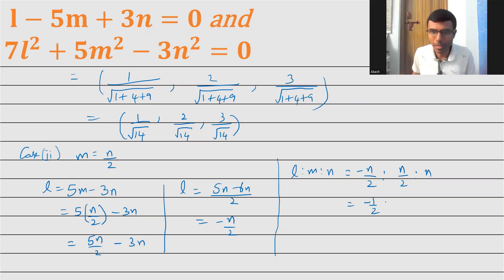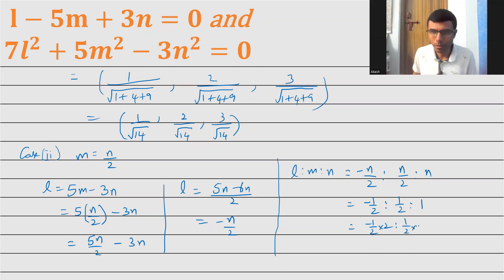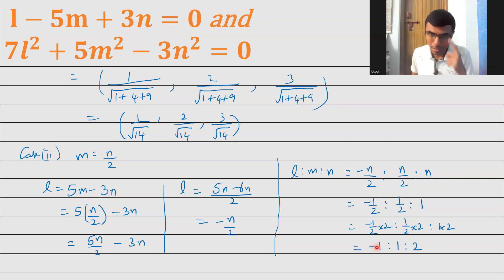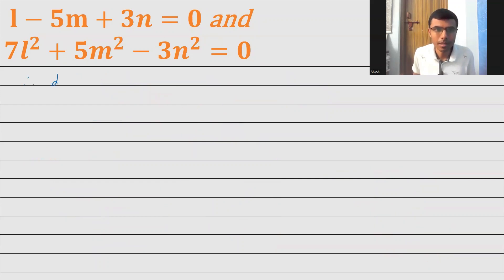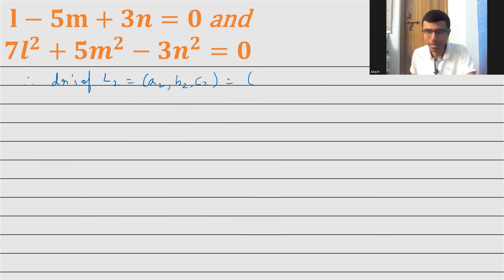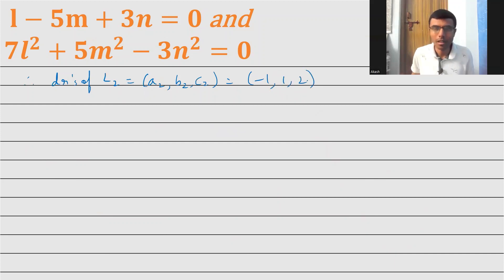l is to m is to n is: l is minus n by 2, m is n by 2, and n is just n. Cancelling n: minus 1 by 2 is to 1 by 2 is to 1. Since the denominator is 2, I multiply each term by 2, giving minus 1 is to 1 is to 2. So l is to m is to n is minus 1 is to 1 is to 2. Therefore the direction ratios of L2, which is (a2, b2, c2), equal to (minus 1, 1, 2).